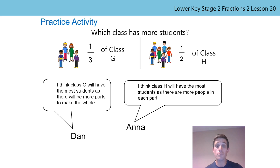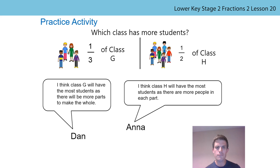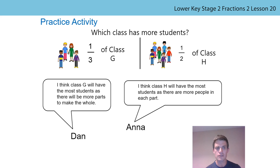Now here's a problem for you to have a go at. Which class has more students? In class G, four students are a third of the class. In class H, six students are half of the class. Two children have made a prediction: Dan thinks class G will have the most students as there'll be more parts to make the whole. Anna thinks class H will have the most students as there are more people in each part. Do you agree with either of them? Show your working and then we'll see whether we agree.